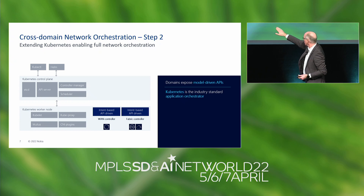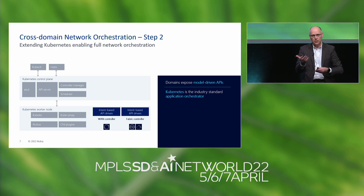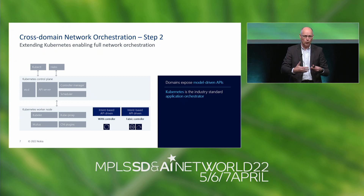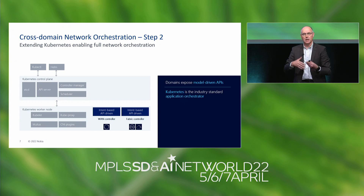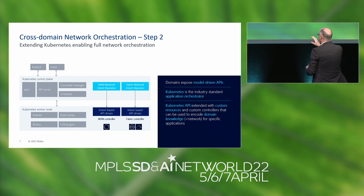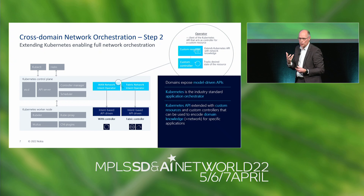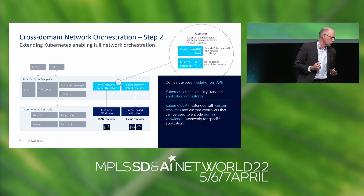The second step: there is an industry standard that, if you Google Kubernetes, has the word 'orchestrator' by default in it — with 'application' in front of it. We were asking ourselves: if there is already an application orchestrator out there that natively works with exactly the same JSON schemas as we have in YANG, couldn't we leverage it? The orchestrator part is already there — it's called the Kubernetes control plane. You go through the API server to your worker nodes to deploy a pod, which stands for an application.